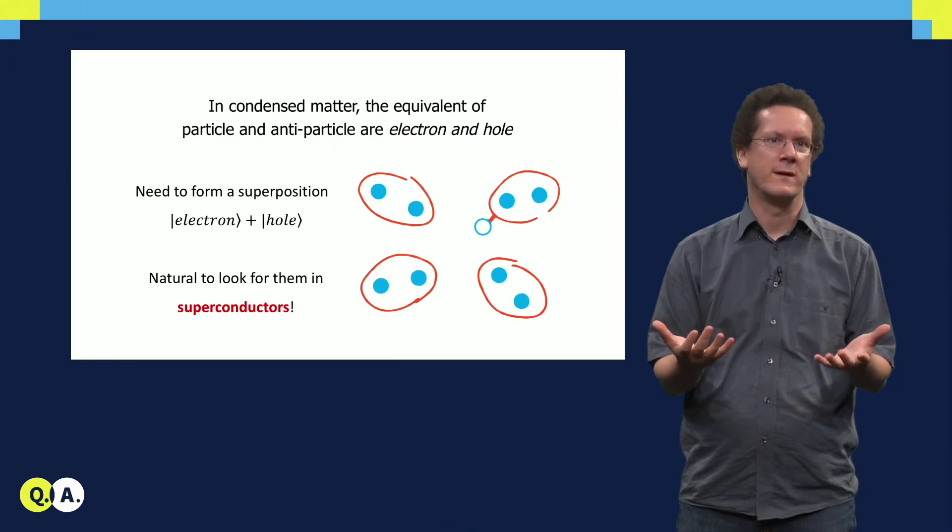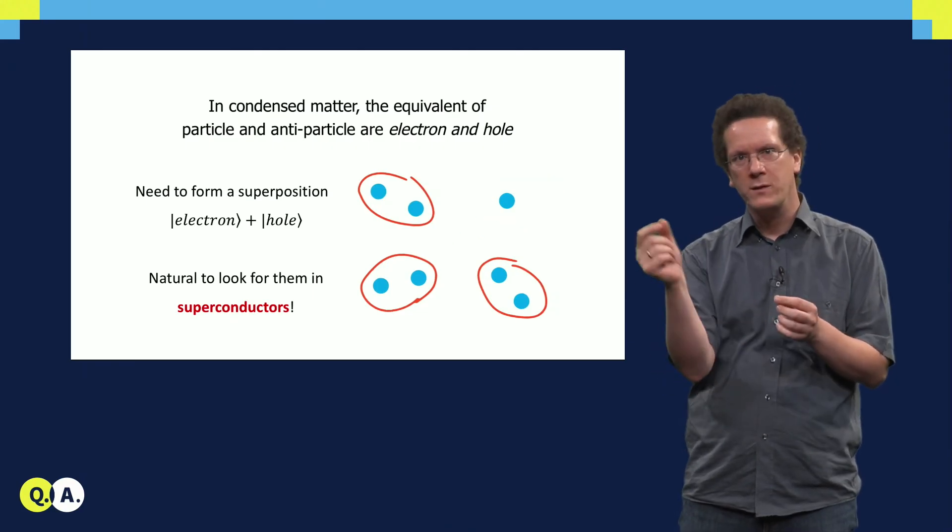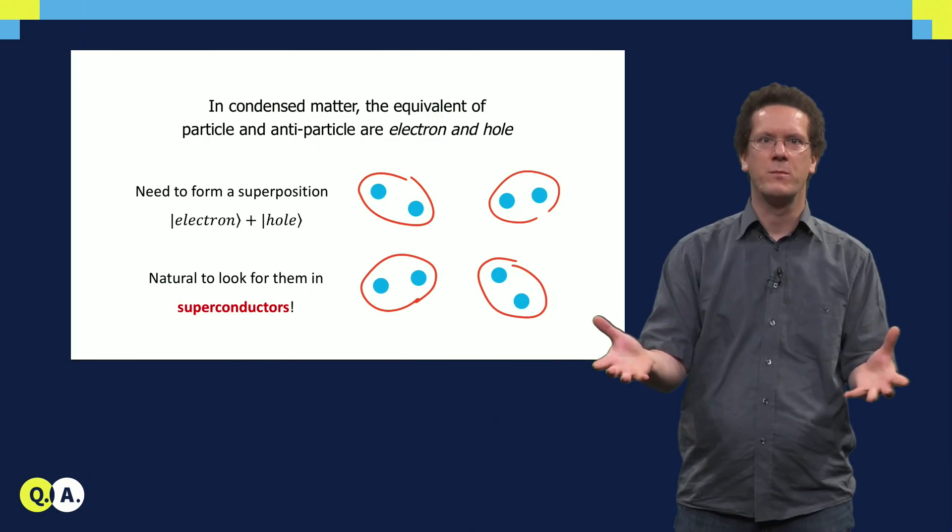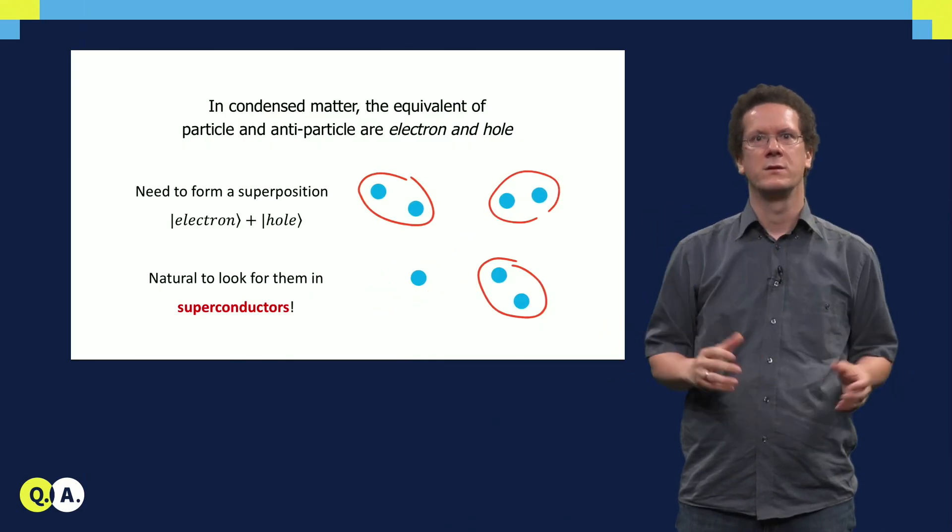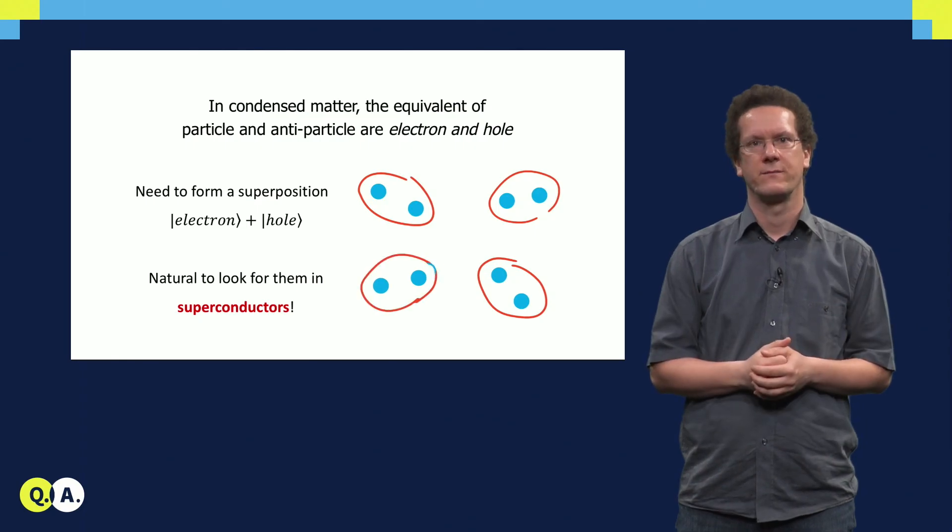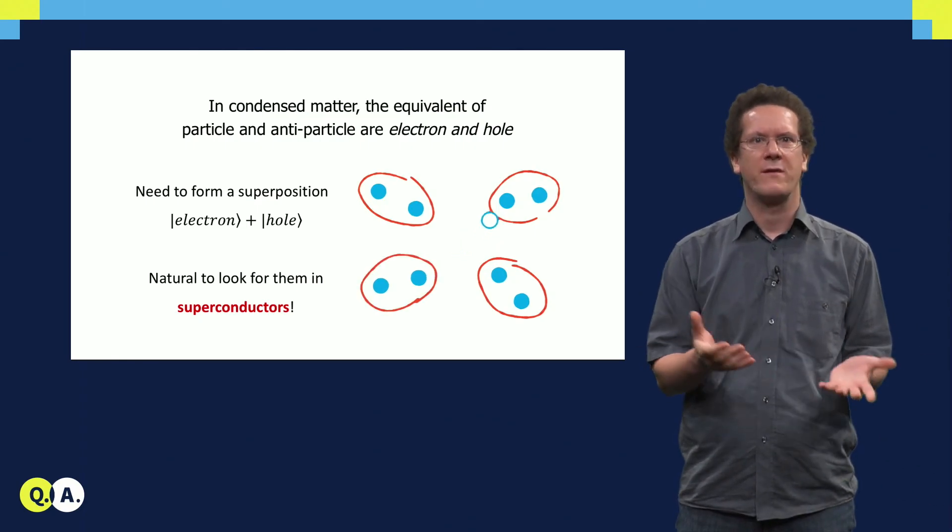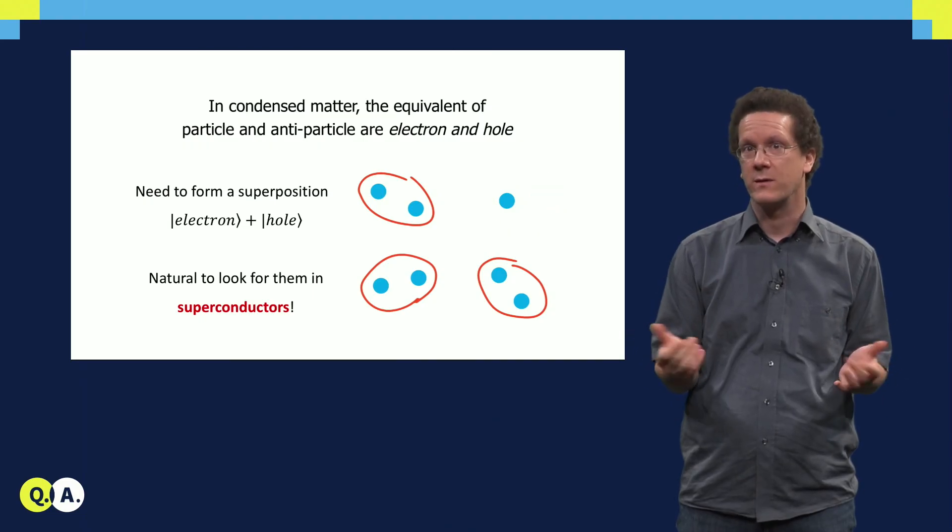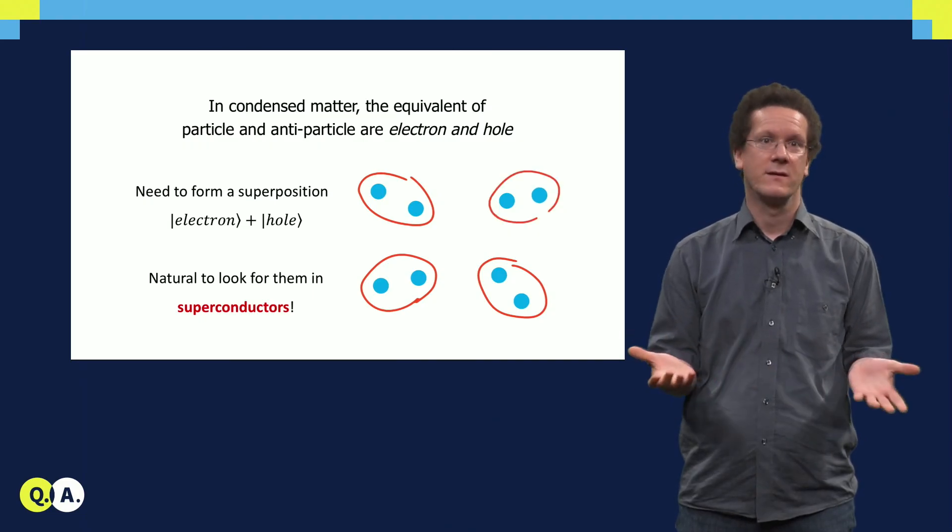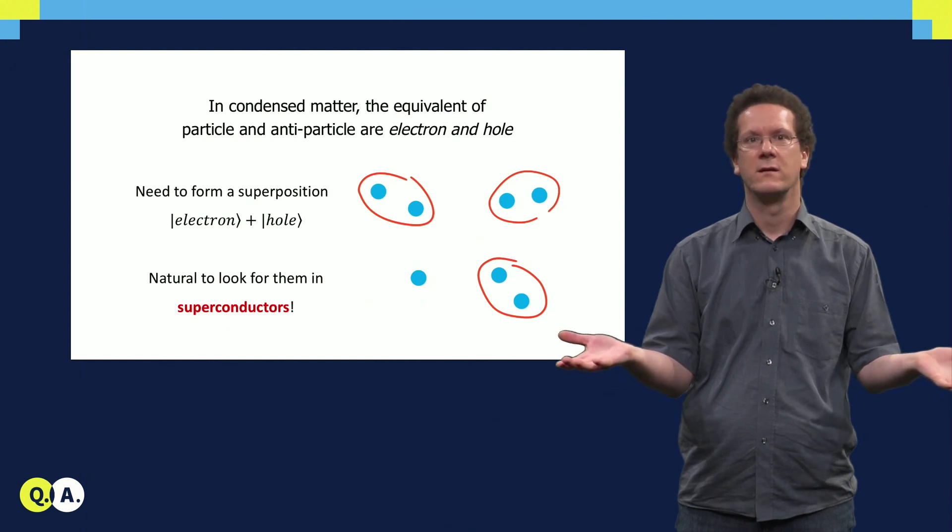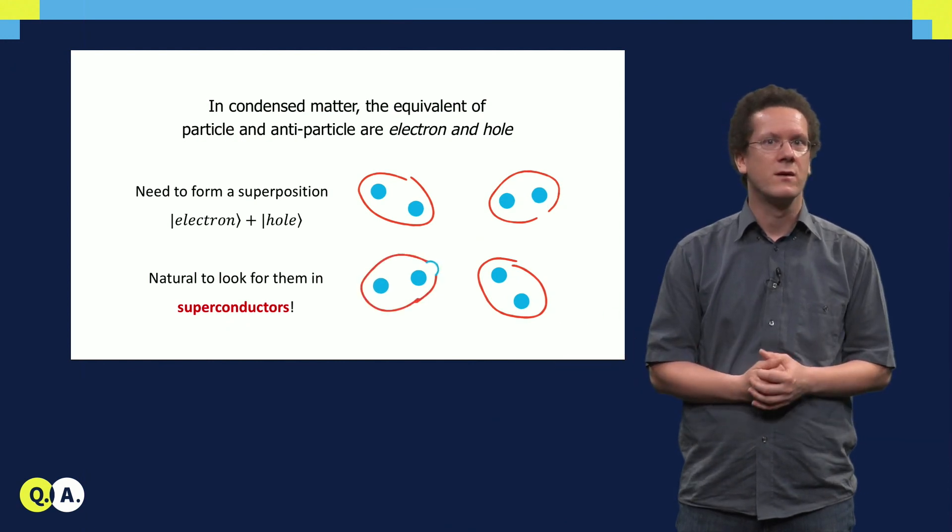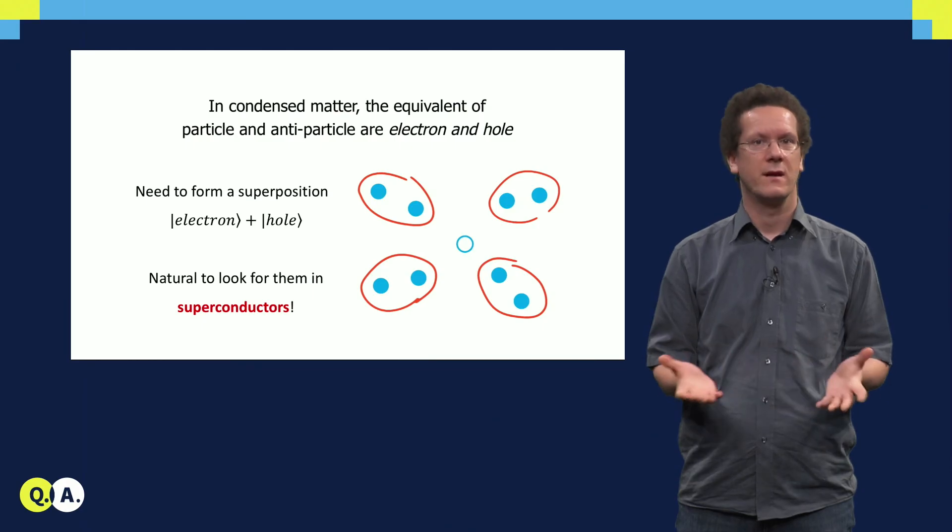Suppose now we have a single hole in our system, but just take one Cooper pair out of the vast sea of Cooper pairs, then this Cooper pair together with the hole just looks like a single electron. The distinction between electron and hole are thus effectively blurred in a superconductor. Hence, we can form a linear superposition of electrons and holes there. It is thus very natural to look for Majorana states in superconductors.